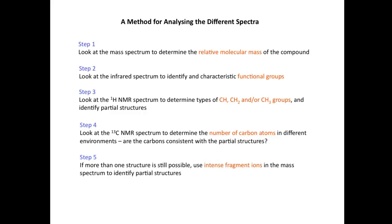Step five: if there's more than one structure still being possible, then we can use intense fragment ions in the mass spectrum to identify partial structures. And finally, very importantly, at the very end, we're going to double check that the proposed structure is consistent with all the spectra — the mass spectrum, the infrared spectrum, the 1H NMR spectrum, and the 13C NMR spectrum.